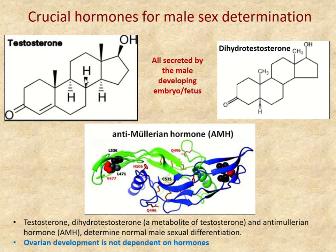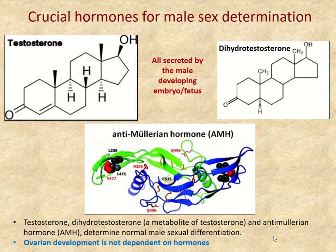There are crucial hormones for male sex determination and typical male development: testosterone, dihydrotestosterone (a metabolite of testosterone that becomes important when examining variations), and anti-Müllerian hormone, also called AMH or Müllerian inhibiting substance (MIS). It's important to note that ovary development is not dependent on hormones.